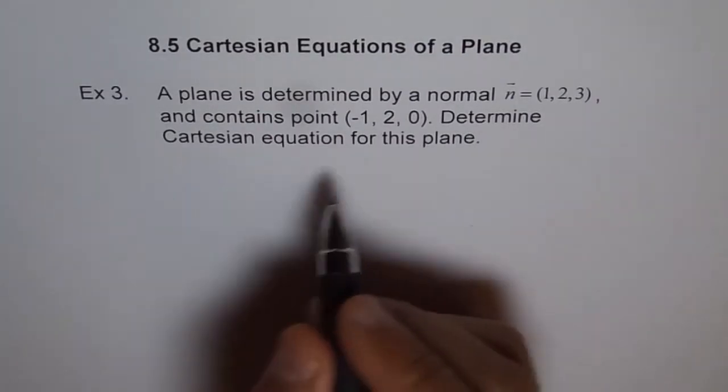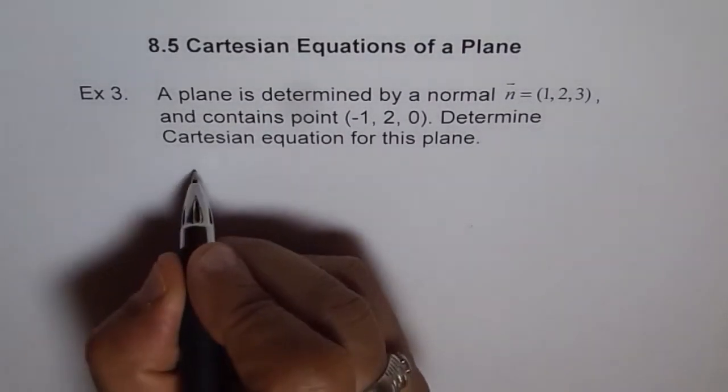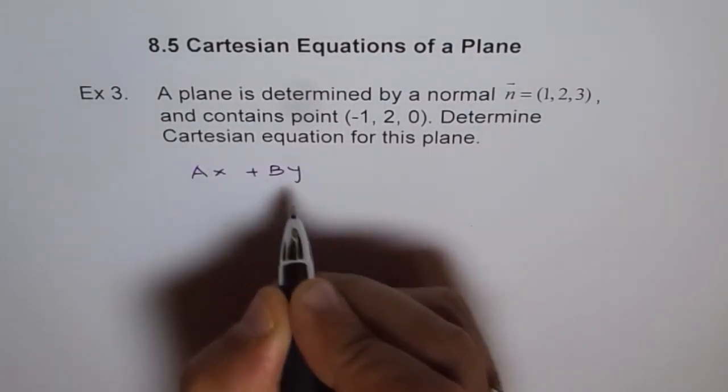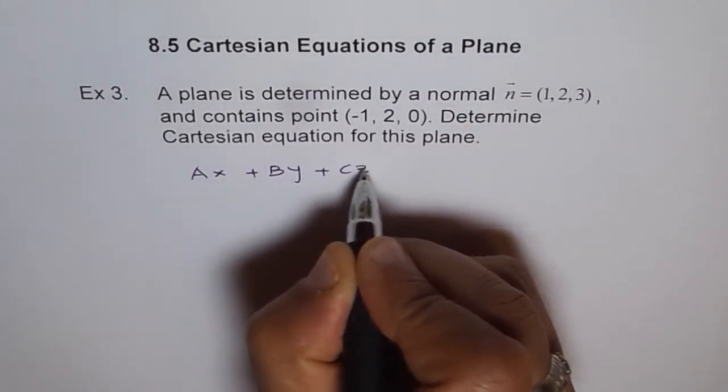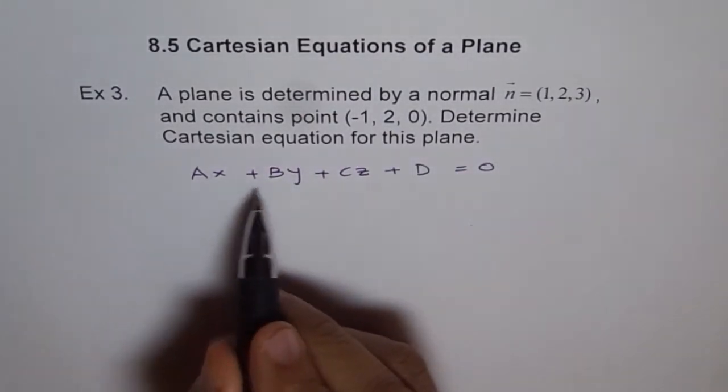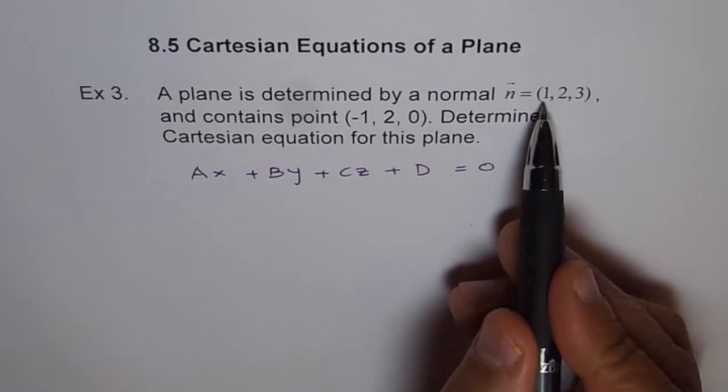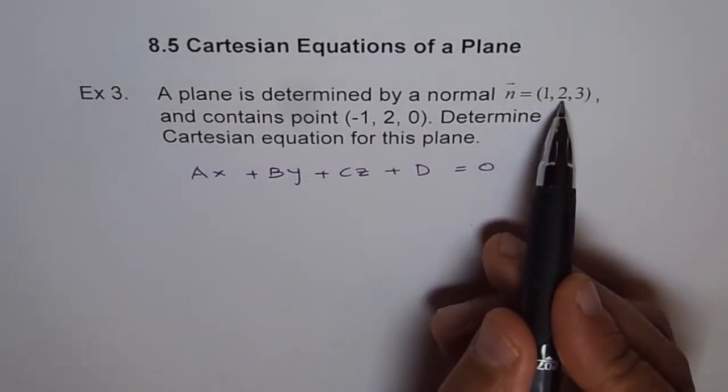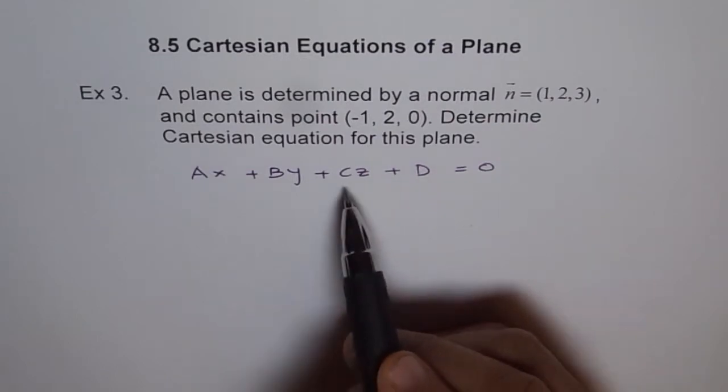Correct. A Cartesian equation for a plane is of the form Ax plus By plus Cz plus D equals 0, where A, B and C represent the normal, which is given to us. So A is 1, B is 2 and C is 3 for us.